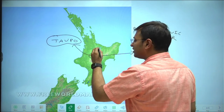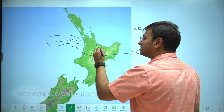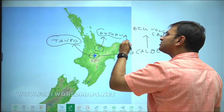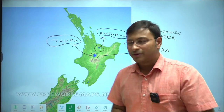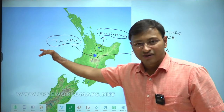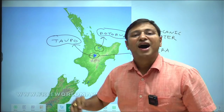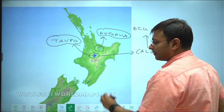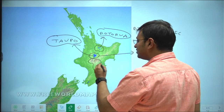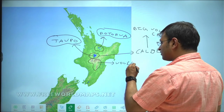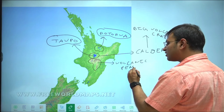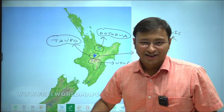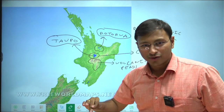One of the world's biggest calderas on the North Island of New Zealand is called Lake Taupo. Another very important caldera in this part of New Zealand is called Lake Rotorua. Both of these are volcanic calderas — very big volcanic craters. The North Island also has volcanic peaks. Please remember: in the North Island you have volcanic peaks and two important volcanic calderas — Taupo and Rotorua.